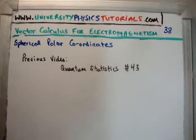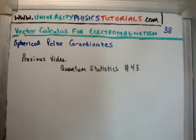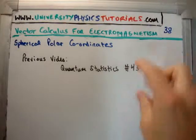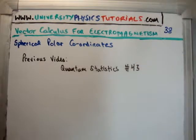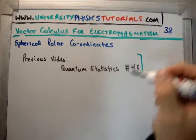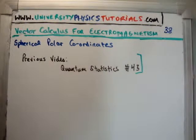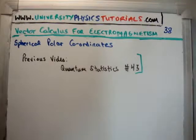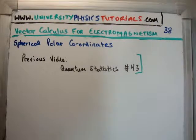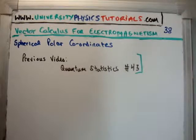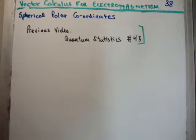I'd like to draw your attention to my website, universityphysicstutorials.com. So the previous video today is on a separate set of videos altogether. It's on my series on quantum statistics. And in video number 43, I proved all the identities required for spherical polar coordinates. So for that reason, I'm going to suggest that you watch video number 43 on quantum statistics. What I'm going to do in this video is just do a recap of what I proved in video number 43. So perhaps you're familiar with this, perhaps you're not. For that reason, like I said, I'm going to be pretty quick.